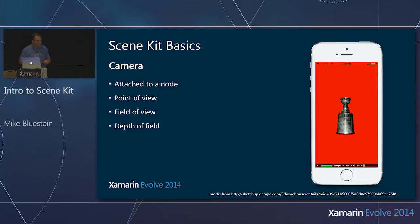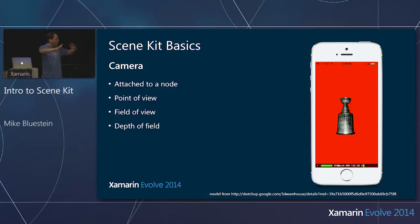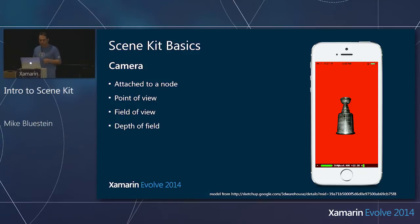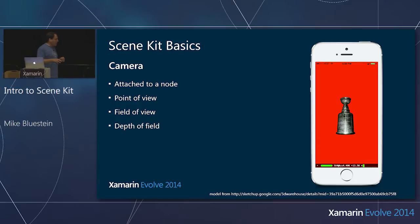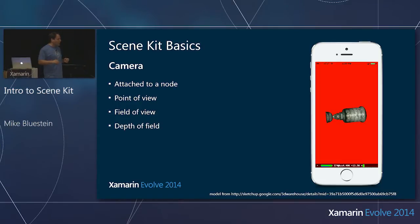What else can you control? How are we controlling what we're looking at? Here I have a model — a Stanley Cup — I just brought in a 3D model. It looks like I'm rotating it around, but the model's actually not moving. I'm just moving the camera around.